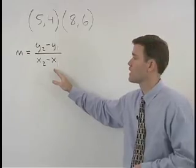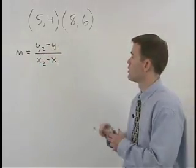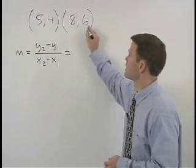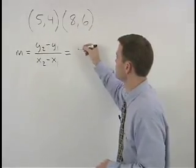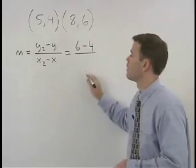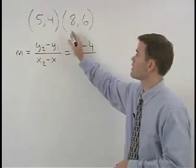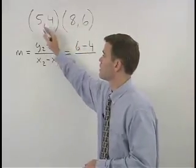In other words, we take our second y minus our first y, which in this case is 6 minus 4, over our second x minus our first x, which in this case is 8 minus 5.